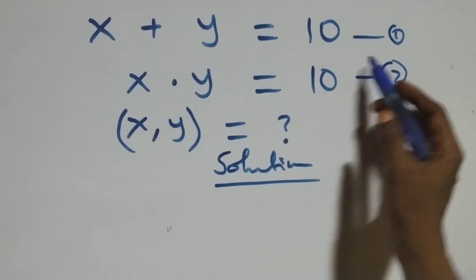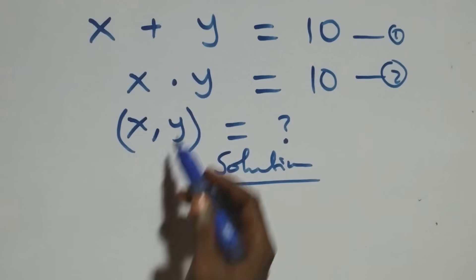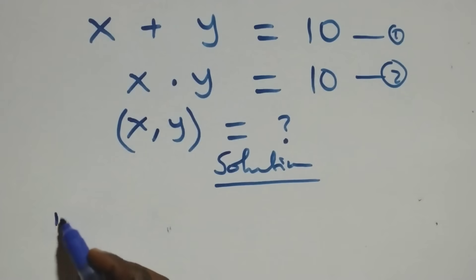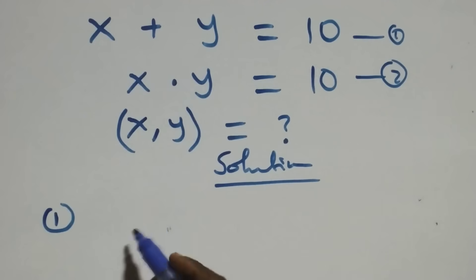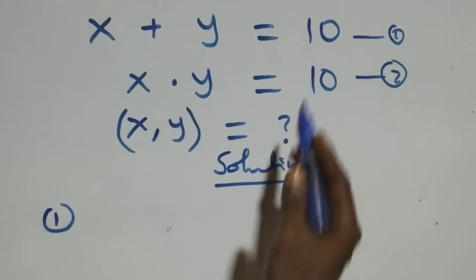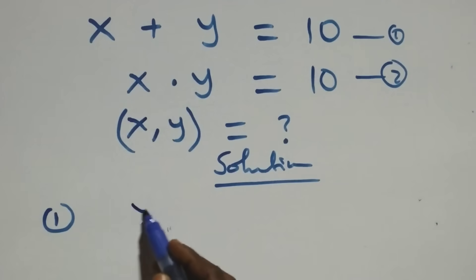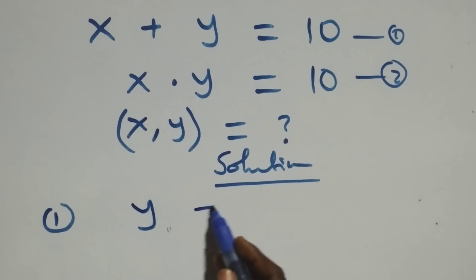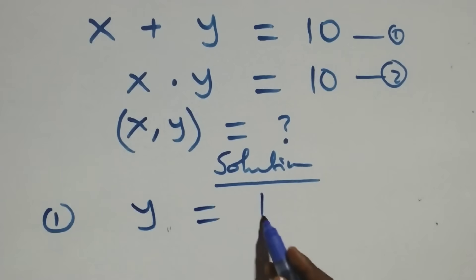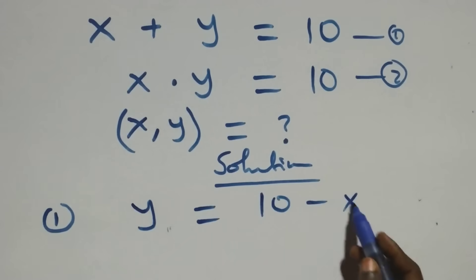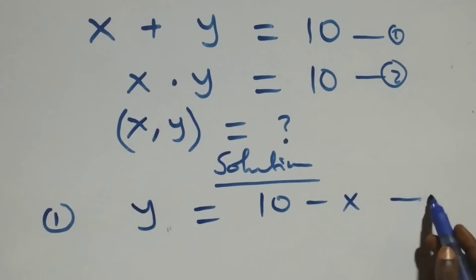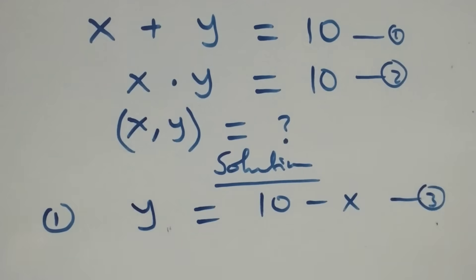Then from equation one, we make y the subject. We take x to the other side and we have y equals to ten minus x. You can label this as equation three.